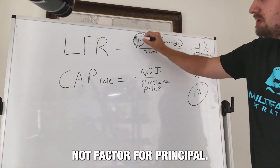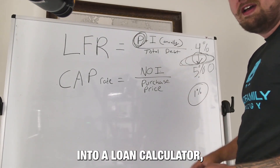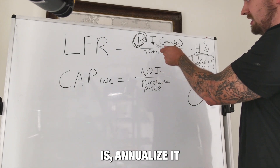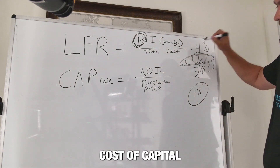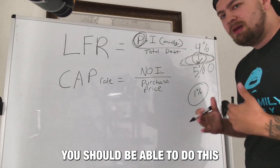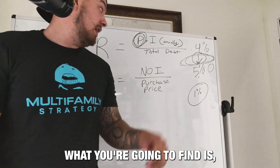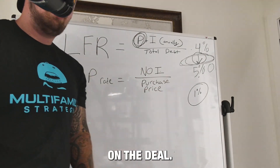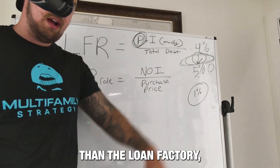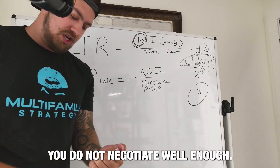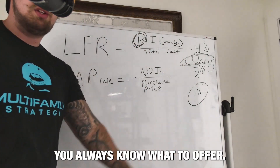Where most people go wrong is they do not factor for principal. So if you have an amortized schedule, you need to plug this into a loan calculator, figure out what the actual monthly payment is, annualize it, divide by the total amount of debt — you're going to get a true cost of capital presented as a ratio. You should be able to do this very quickly. You always want your cap rate to be higher than the loan factor rate. If you do not have a positive spread, you did not negotiate well enough and you need to go back to the drawing board. This cannot be skipped. If you do this simple math, you always know what to offer.